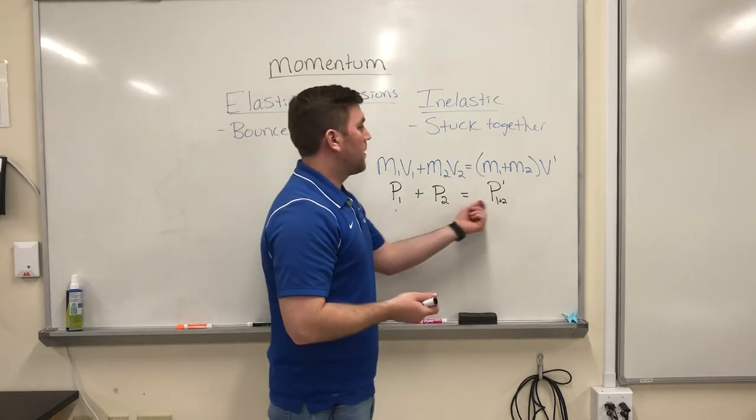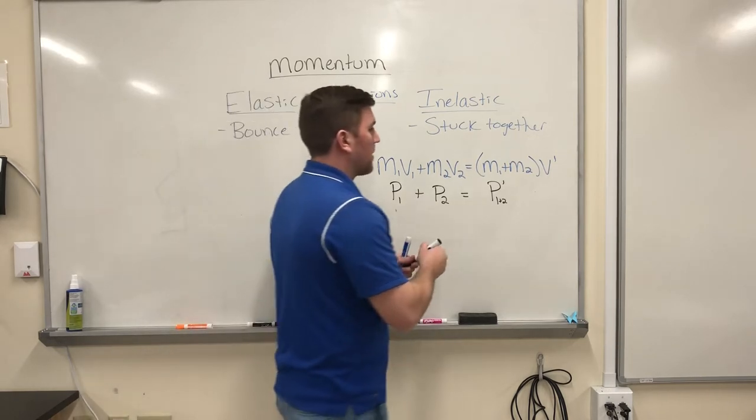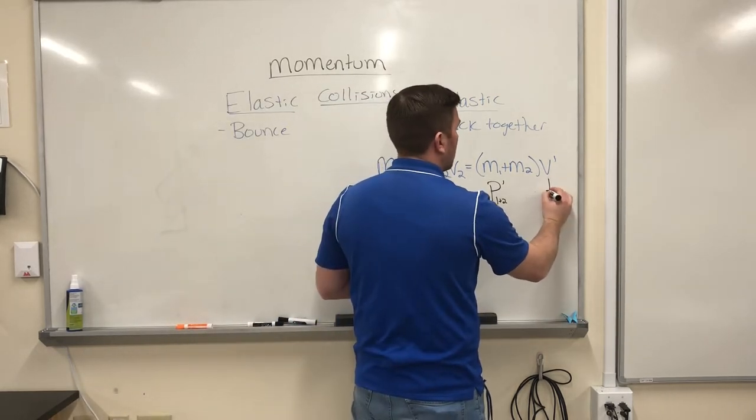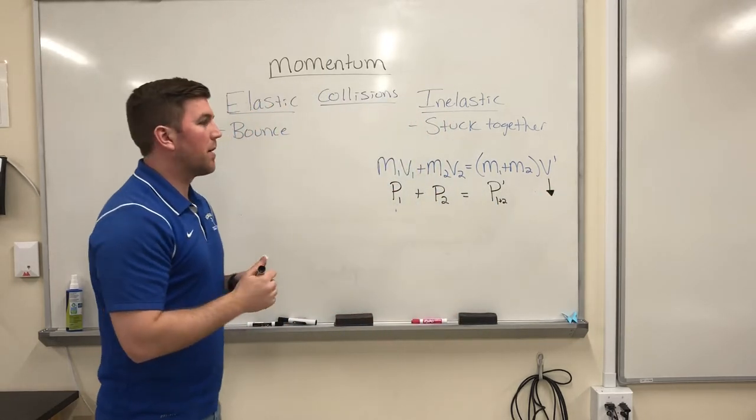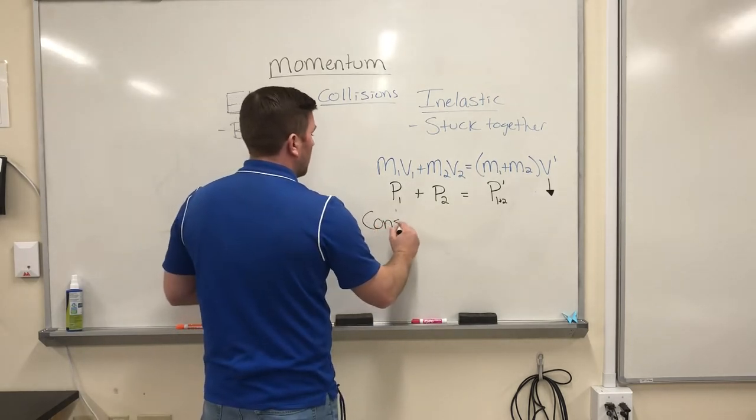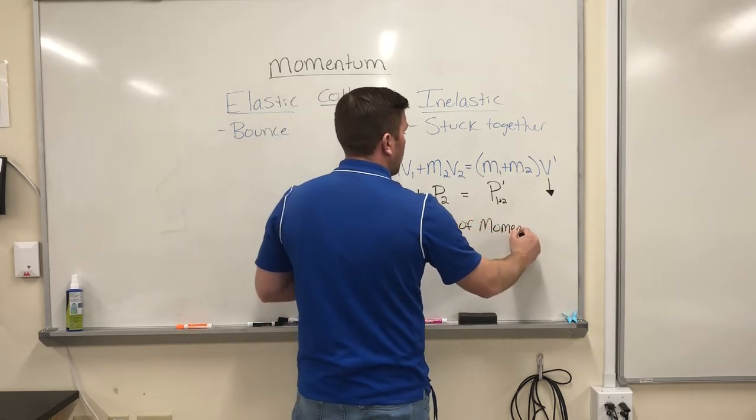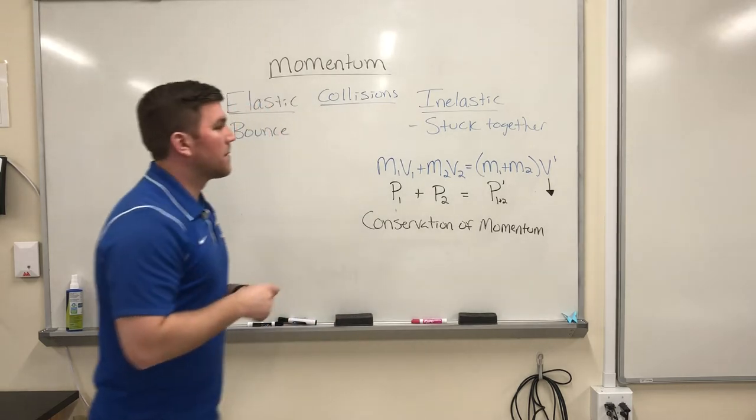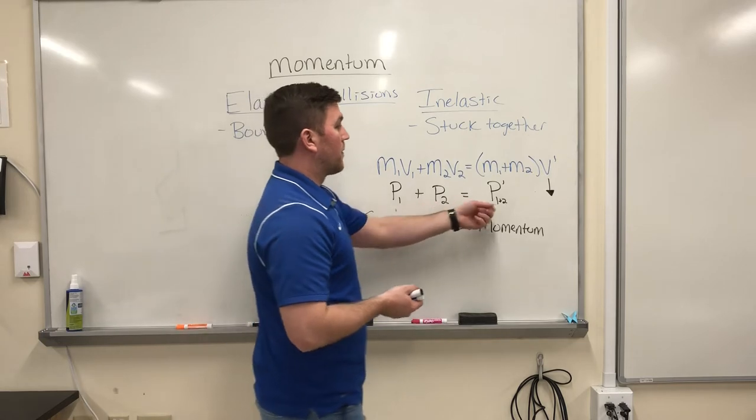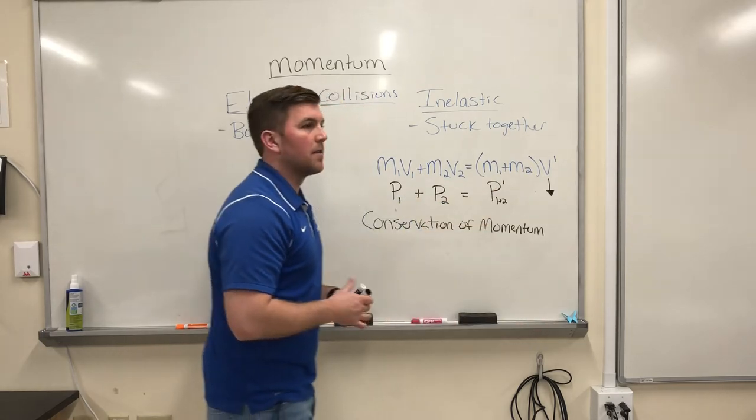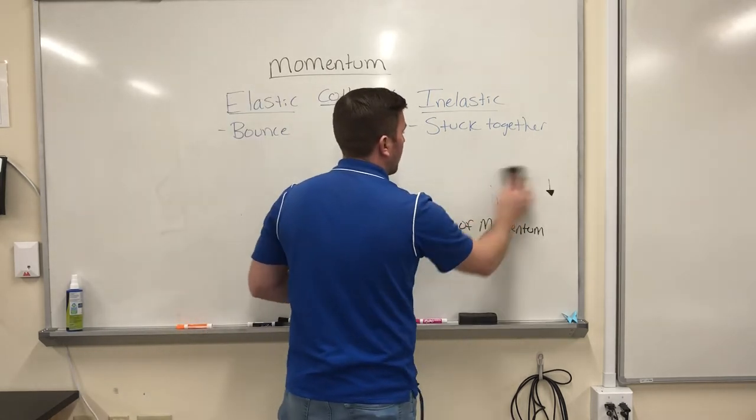So now instead of huge accelerations for cart two when it gets hit, they stick together and their velocity ends up being lower. So the velocity change in an inelastic collision is much lower than an elastic collision because the mass went up. This is due to the conservation of momentum. When momentum gets conserved, the total doesn't change. So if I've increased my mass, I must have decreased the velocity that they were moving at. So we have our two types of collisions, inelastic and elastic.